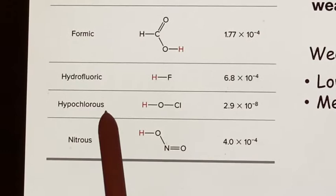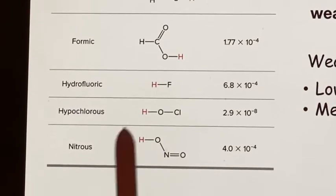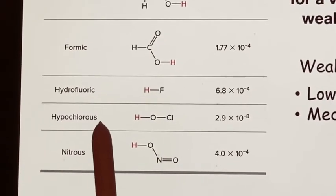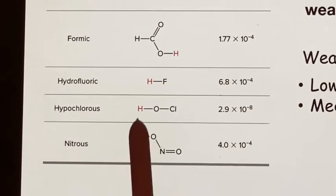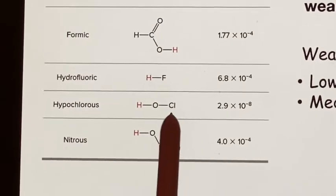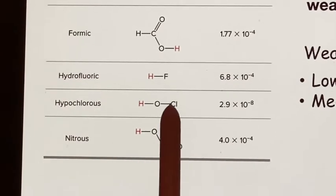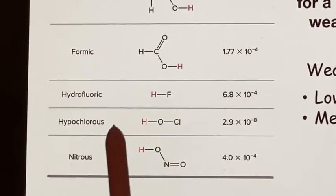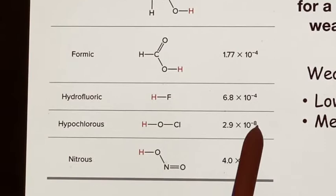The hypochlorous acid is another. Now we had the perchloric acid. This is the complete other end of the spectrum where there's only one oxygen attached to the chlorine. There's four of them. You know, how many oxygens are attached to chlorine? So it ends up being a weak acid.